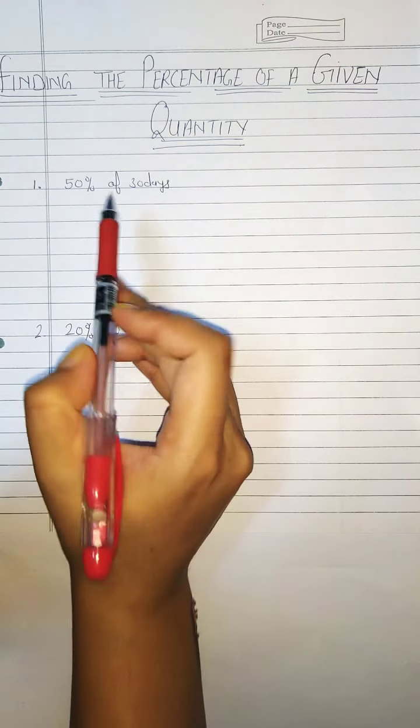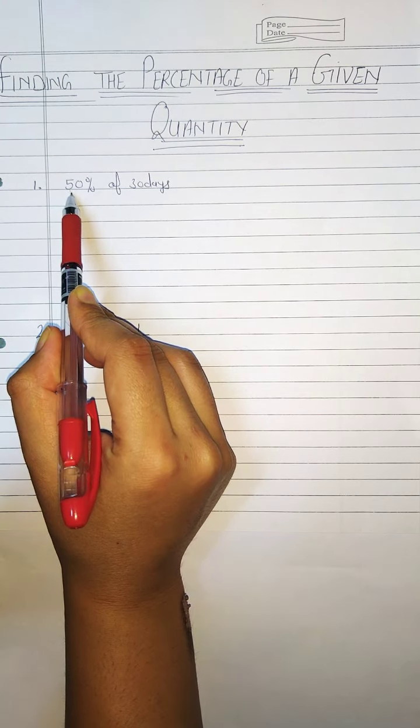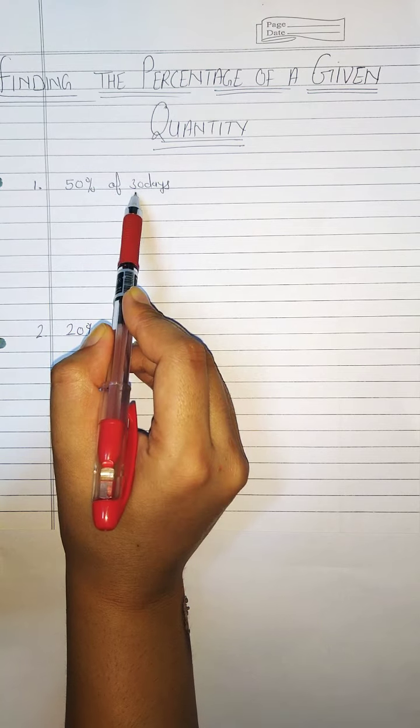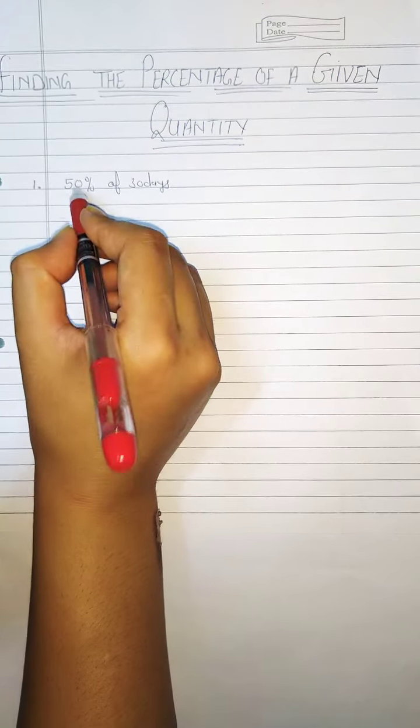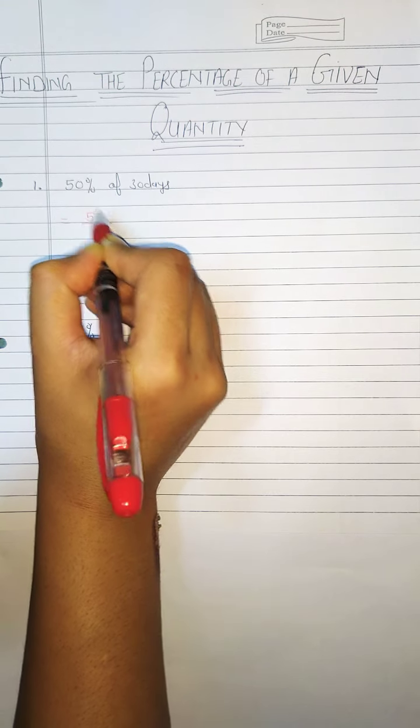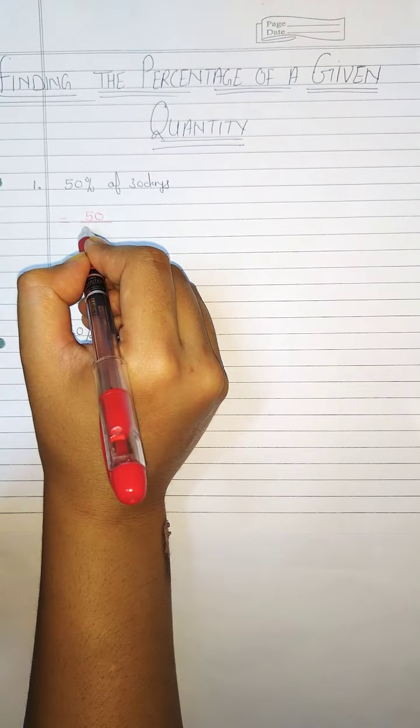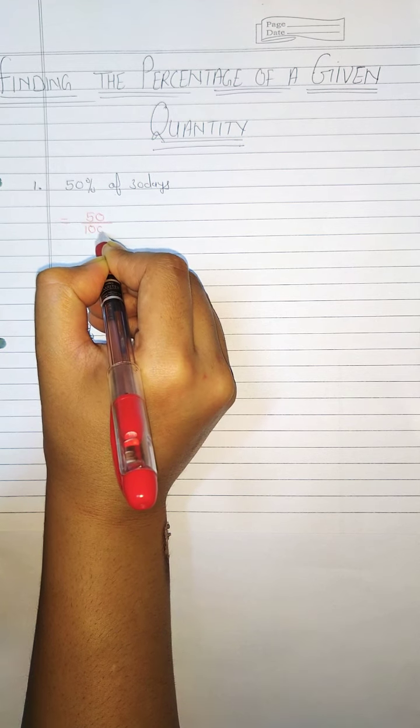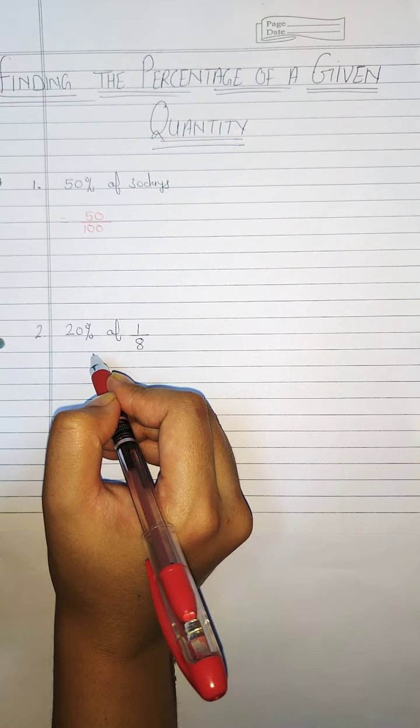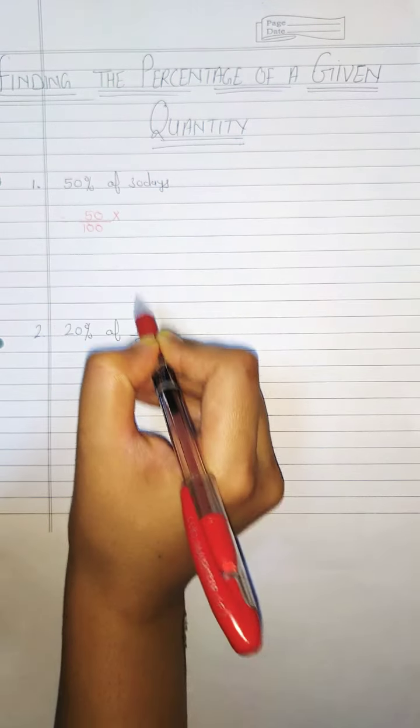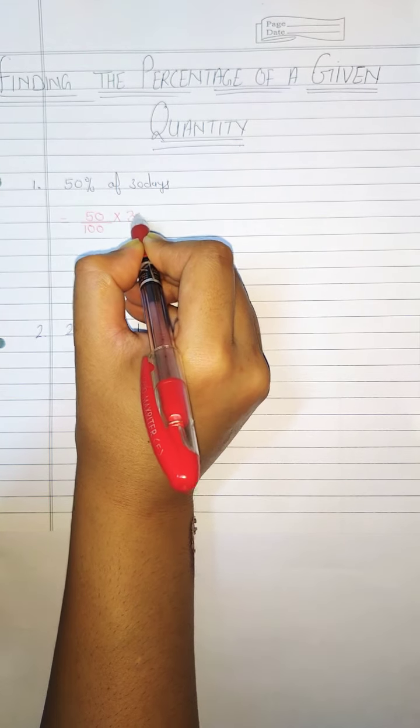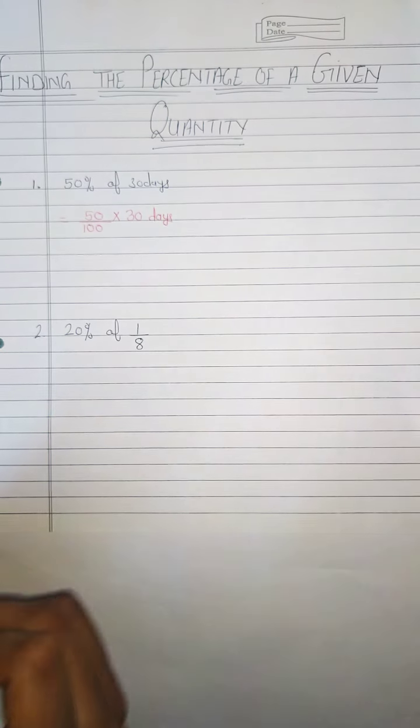So the first example is find 50% of 30 days. First we will write 50%. When we remove percentage, 100 goes to denominator. Of means multiply and here we have 30 days.